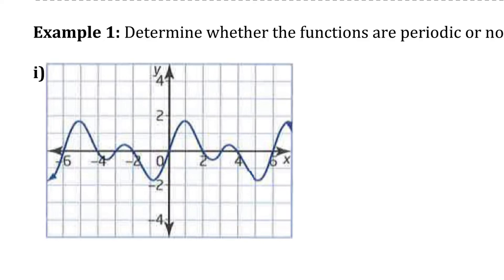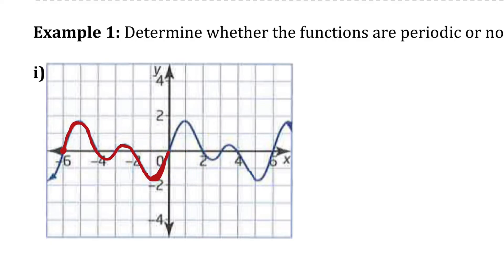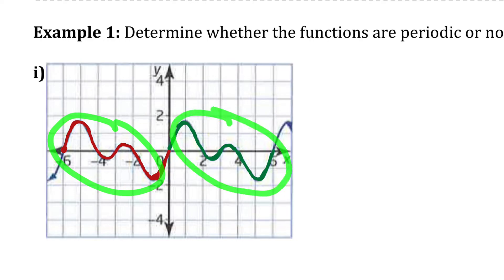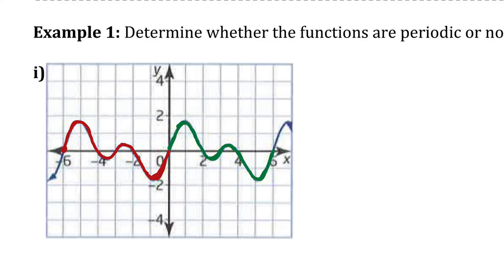We could choose any arbitrary starting point for our cycle. I'm going to start right here and map off what I think is one cycle. Notice what I highlighted in red — if I shift that cycle over, it lines up exactly with what happens after it. So that pattern of y-values repeats. I'll shade the second cycle in green. This red cycle and this green cycle match exactly, making this function a periodic function.